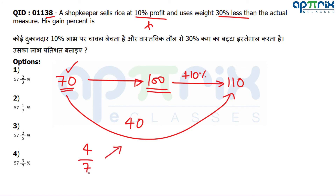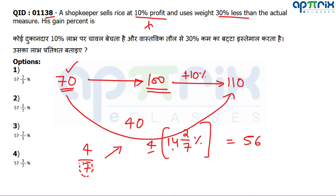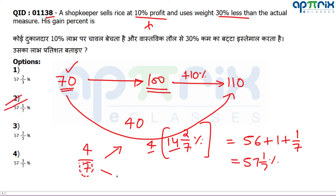Profit = 40/70 = 4/7 in fraction terms. To convert to percentage: 1/7 = 14.28% approximately, so 4/7 = 4 × 14.28% = 56% + 8/7% = 57 and 1/7 percent. Alternatively, 400/7 percent gives the same result. Use whichever method you are comfortable with. Knowing fraction-to-percentage equivalents makes this faster.